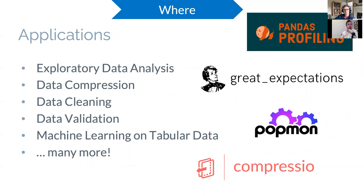In terms of where you would apply this, you can think of Pandas profiling for exploratory data analysis. We're actually using it for great expectations, which is a library to generate data validation rules called expectations. You could map the semantic types automatically to these rules. Similarly for Pogmon, which does validation over time, model monitoring, data monitoring. We've also used it in Compressio to make efficient compression of your Pandas data frames. You can also use it for data cleaning in many more other applications.